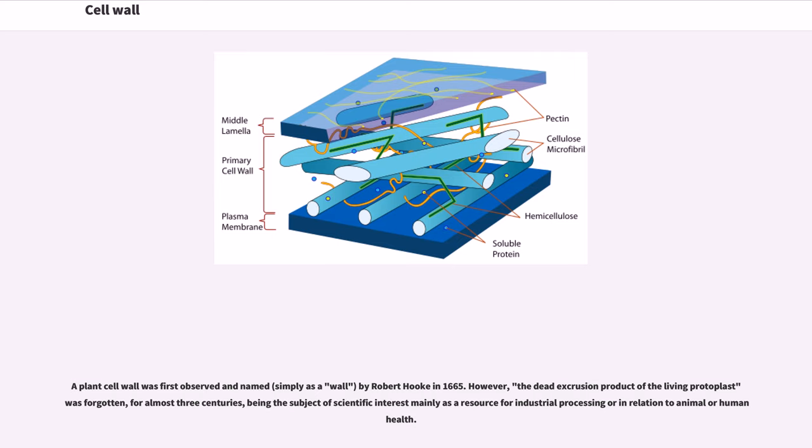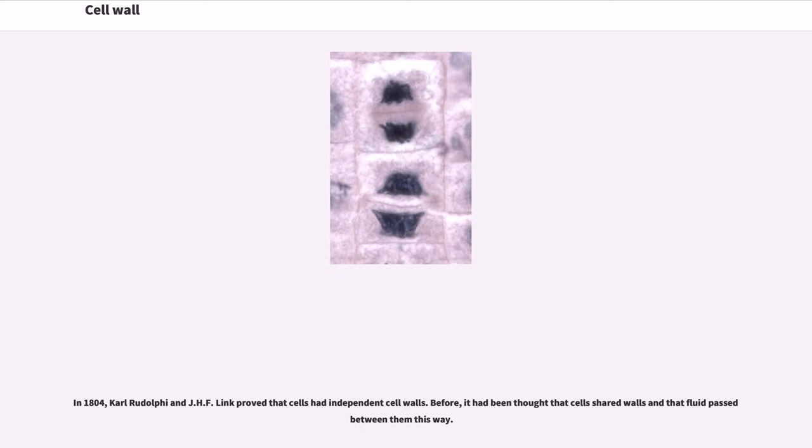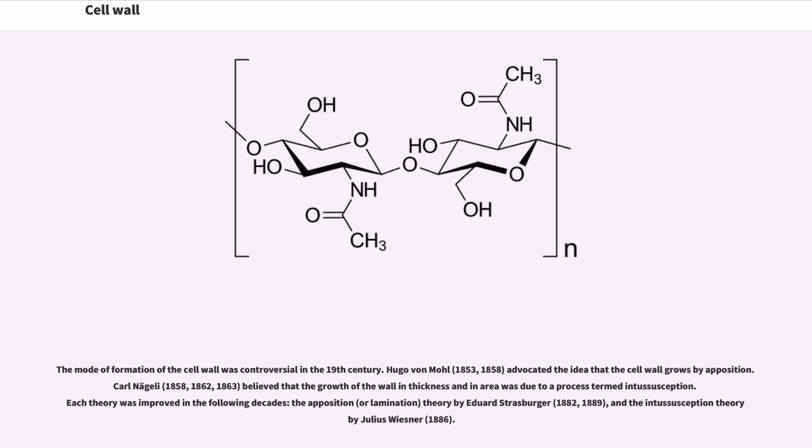A plant cell wall was first observed and named, simply as a wall, by Robert Hooke in 1665. However, the dead exclusion product of the living protoplast was forgotten, for almost three centuries, being the subject of scientific interest mainly as a resource for industrial processing or in relation to animal or human health. In 1804, Carl Rudolf I and J.H.F. Link proved that cells had independent cell walls. Before, it had been thought that cells shared walls and that fluid passed between them this way.